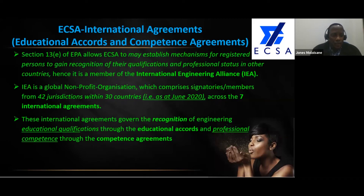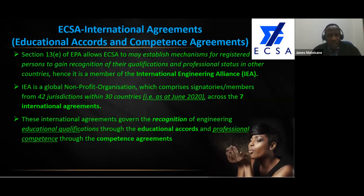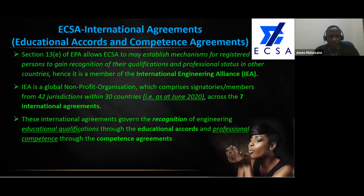Who's the IEA? This is a global nonprofit organization which comprises signatories and members — I'll talk about the distinction between signatories and members — from 42 jurisdictions within 30 countries. This information is accurate as at the 30th of June 2020, because at IEA we normally have meetings in the last or middle week of June. These international agreements govern the recognition of engineering educational qualifications through the educational accords and professional competence through the competence agreements.